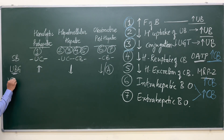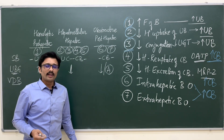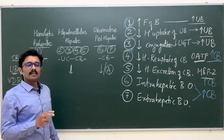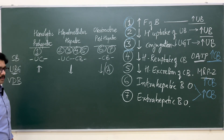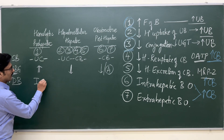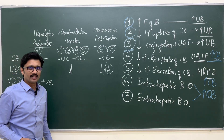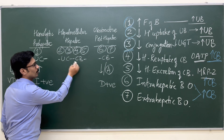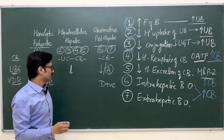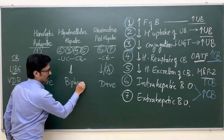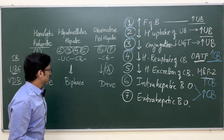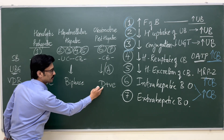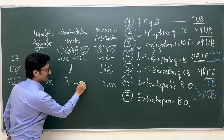Next is the Van den Bergh test, a biochemical test done to differentiate whether the bilirubin increased is conjugated, unconjugated, or both. This test is indirect positive in case of unconjugated hyperbilirubinemia. In case of conjugated bilirubinemia, it is direct positive. And in case of both increased unconjugated and conjugated, it is a biphasic response. I have made a separate video on this Van den Bergh test where you can understand what is direct positive, indirect positive, and biphasic reaction.